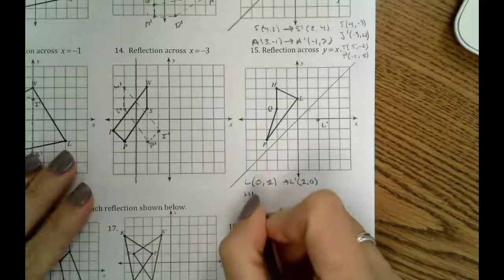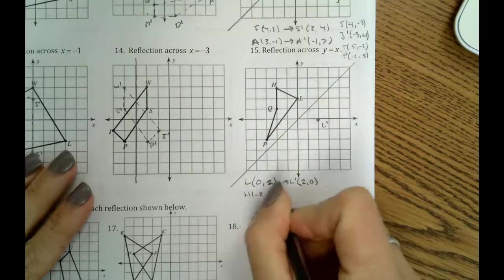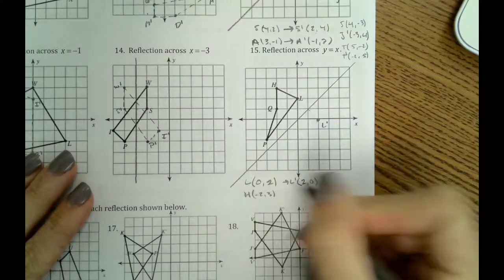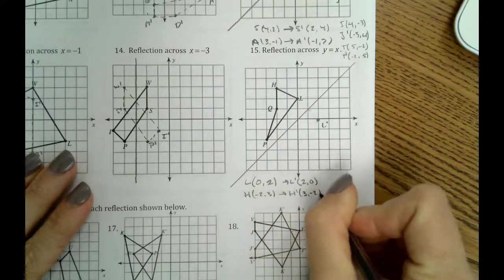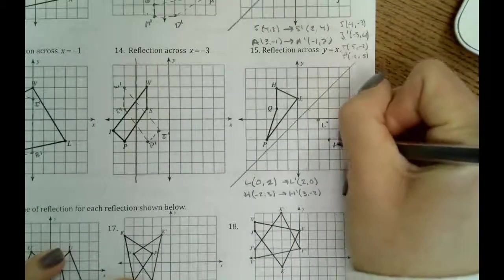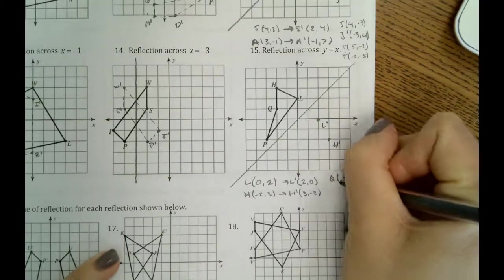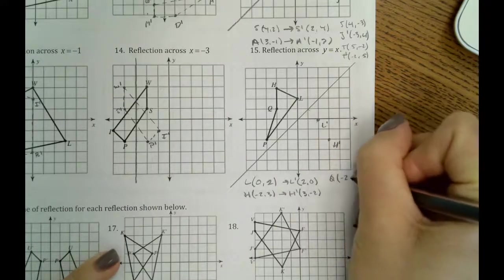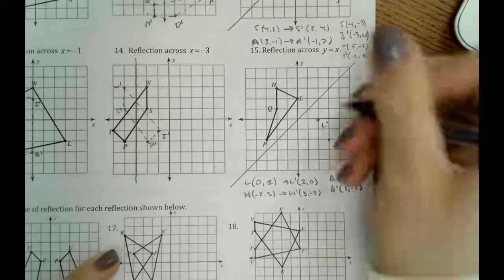So if you look at h, h is at negative 2, positive 3. So our new h will be at 3, negative 2. And then q is at negative 2, 1. So our new q will be at 1, negative 2.